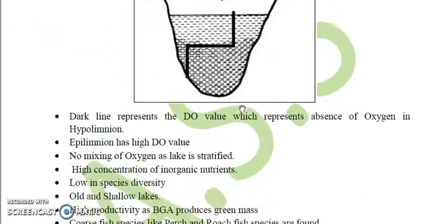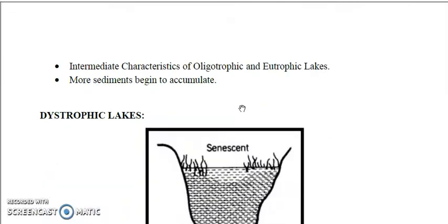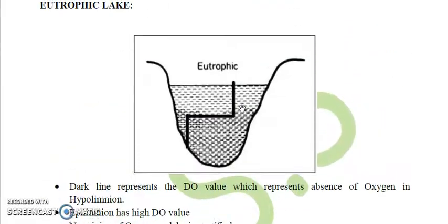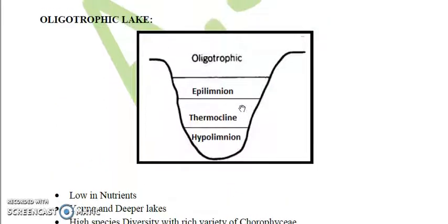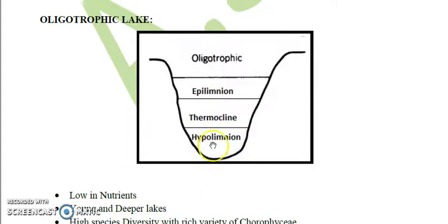In the diagram, epilimnion is shown with E, thermocline with D, and hypolimnion with H, with depth shown vertically alongside oxygen presence. In the oligotrophic lake, sunlight reaches all the way to the hypolimnion. Oxygen concentration is highest in the epilimnion, decreases slightly in the thermocline, but oxygen remains present in the hypolimnion.